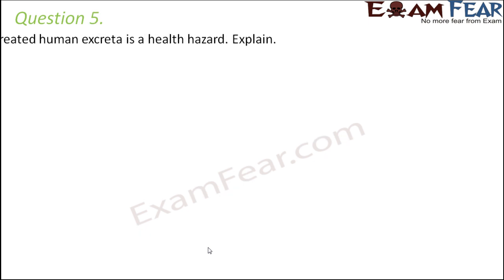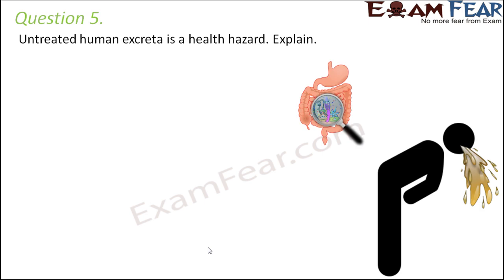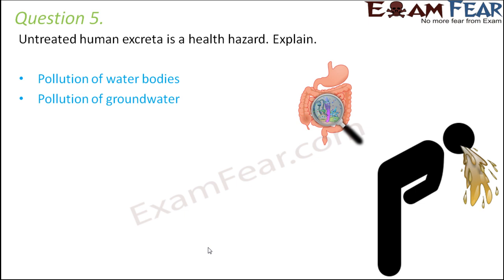Question number 5: Untreated human excreta is a health hazard — explain. Human excreta is an organic impurity containing organic substances. If it is directly disposed into a water body like a river or ocean, it will pollute the entire water of that body. It can also pollute groundwater because if left on the ground, it will gradually seep below and contaminate groundwater.